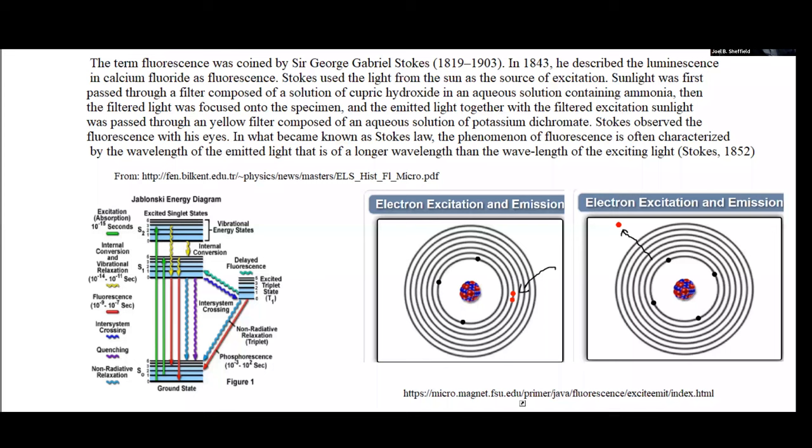One of the interesting things was the way Stokes actually started doing this work. He used sunlight, this is in 1850 or so. He made solutions of various colors - cupric hydroxide containing ammonia that made blue light, and filtered that onto a specimen. What he got out, he then filtered again through a yellow filter, a solution containing potassium dichromate, which is a yellow substance. He saw the fluorescence by just looking at it.